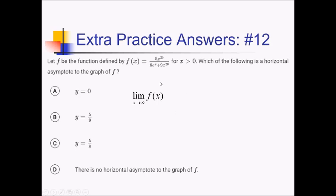If we take that limit, we're going to choose our champion. On the numerator, we only have 5x to the 20th. In the denominator, 8e to the x squared is faster growing than 9x to the 20th, so we're going to keep that.